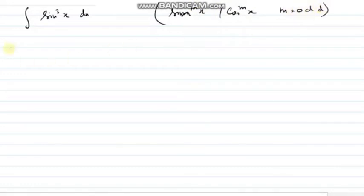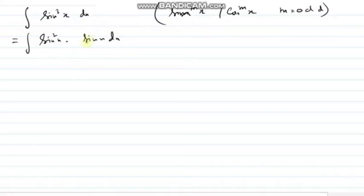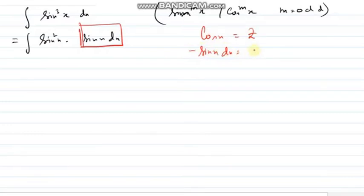What happens in that case? I will write it as sin²x · sin x dx. For example, if it is sin⁷x, I will write it as sin⁶x · sin x dx. Now, what should I take as z so that I can get the differential? If I take cos x as z, I will get minus sin x dx as dz. Now, sin²x — can I write it as 1 minus cos²x?